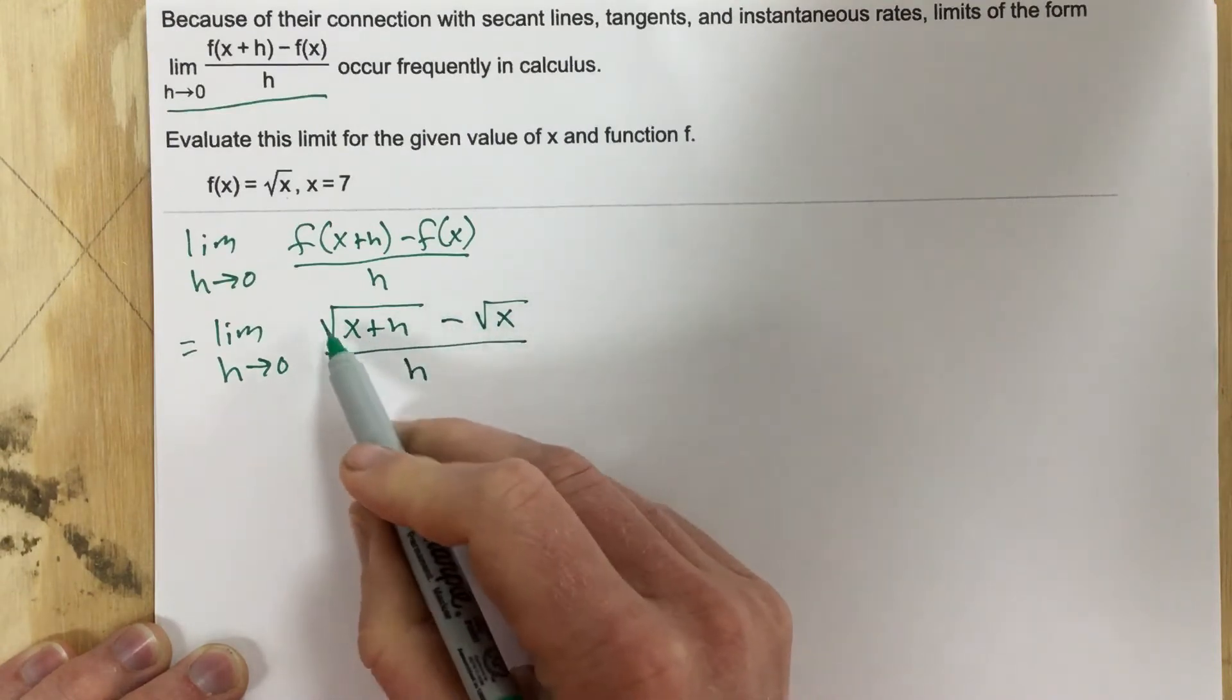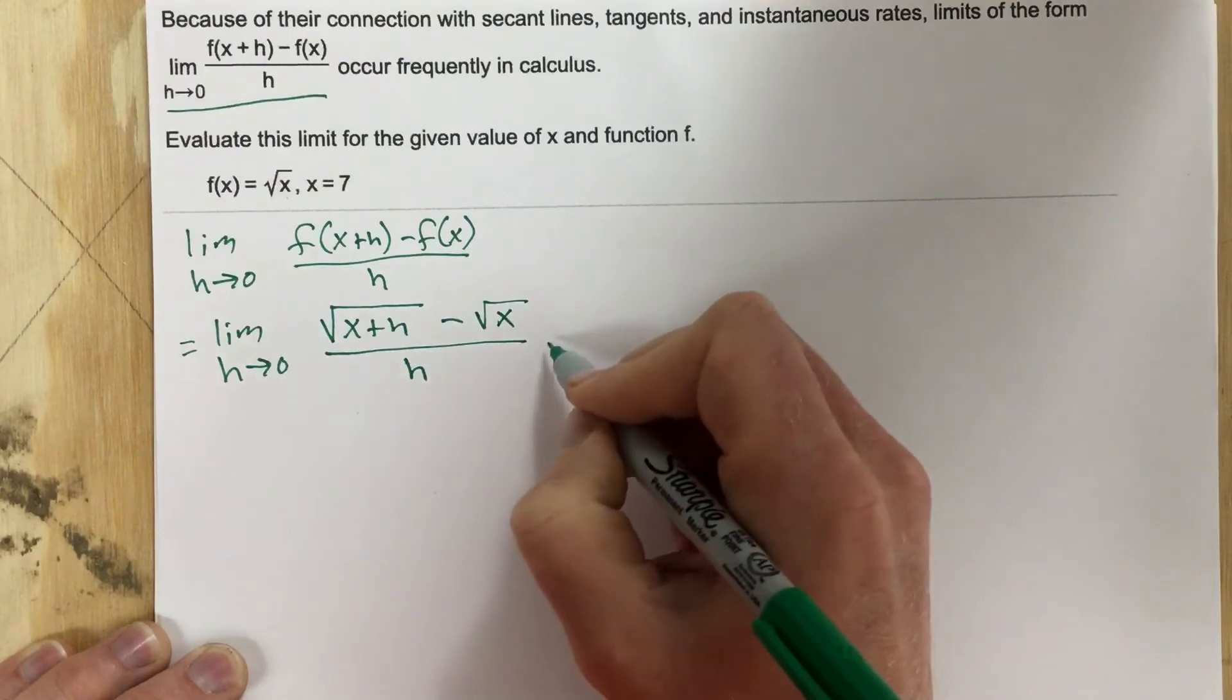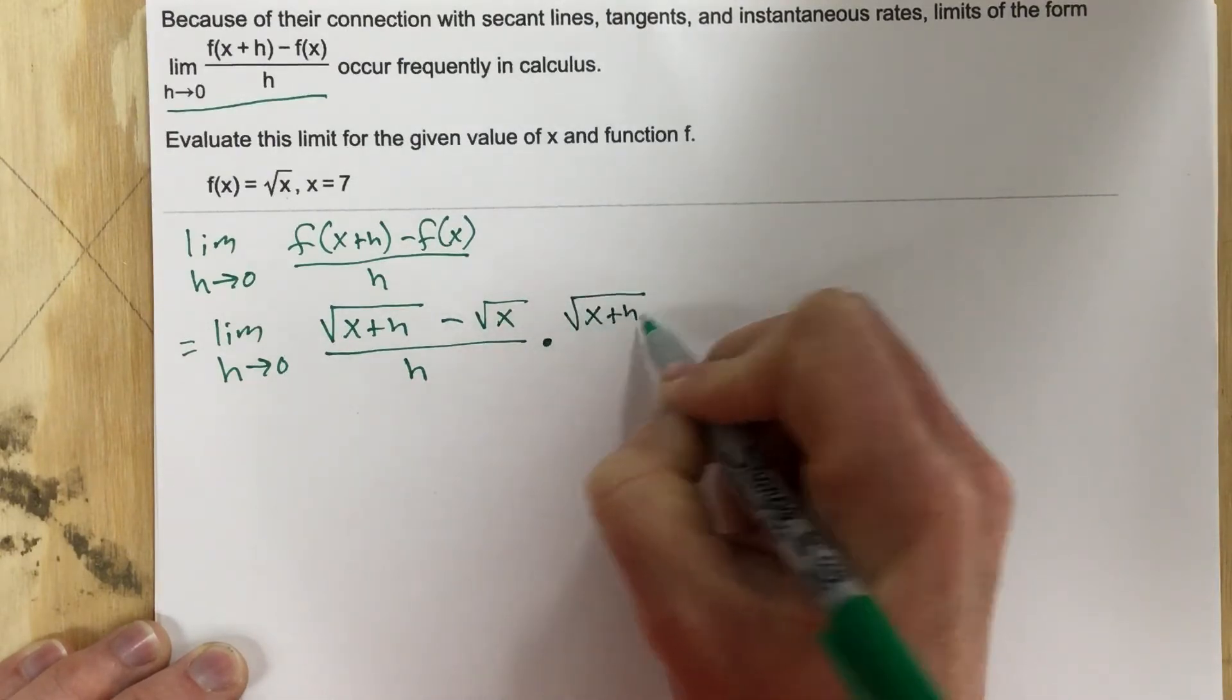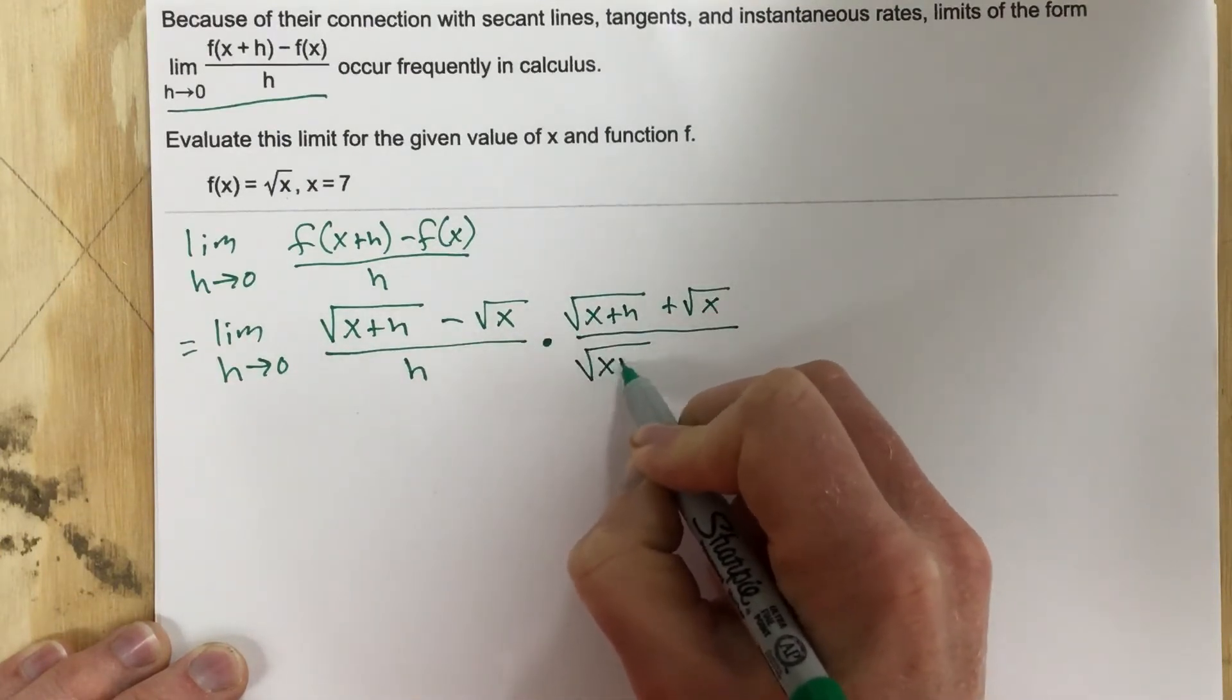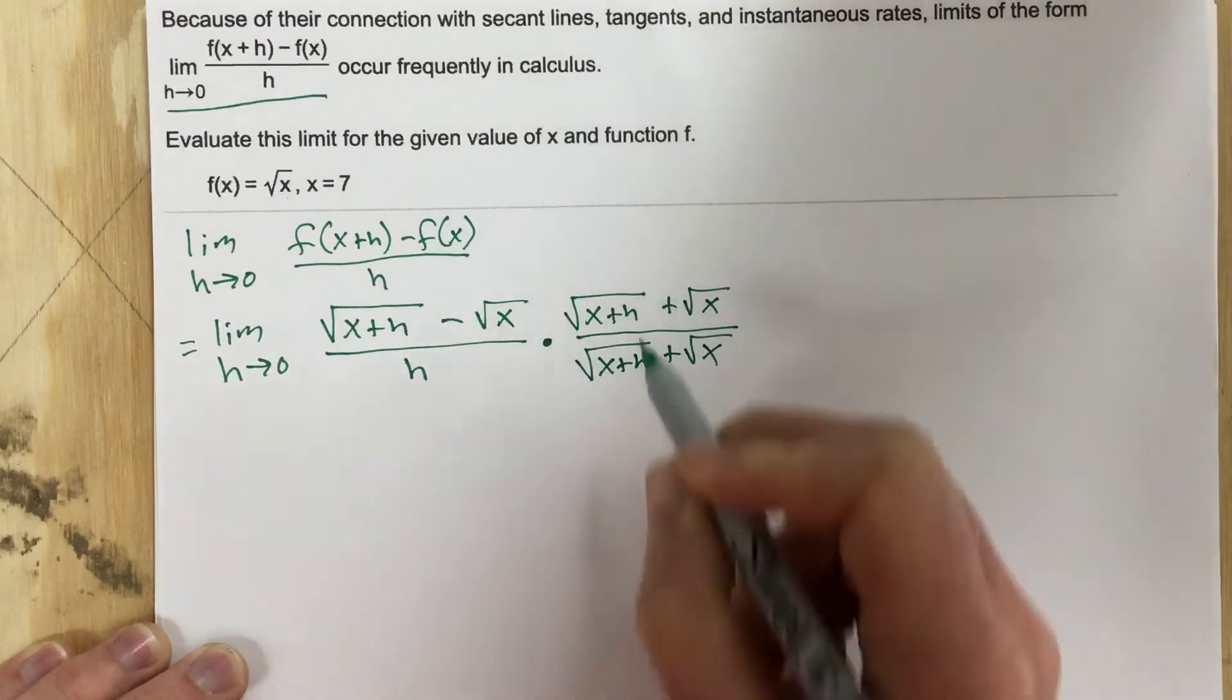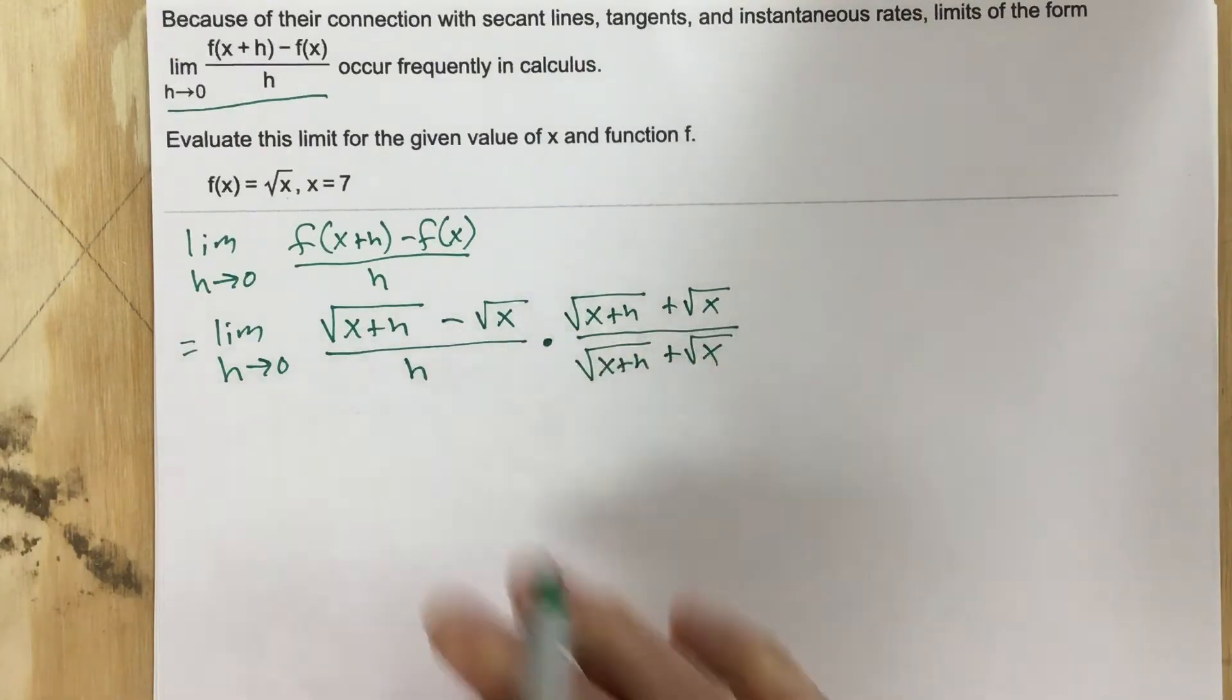But any time I see a root with a subtraction sign of some other number, in this case it's a root, I'm thinking conjugate. I multiply by its conjugate, so it's root x plus h plus root x over root x plus root x. And remember, this numerator and denominator are the same, so I'm technically just multiplying by 1. I'm not changing this expression at all.